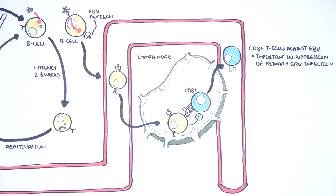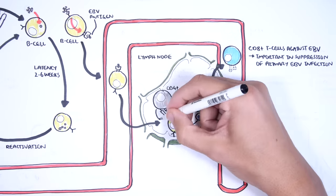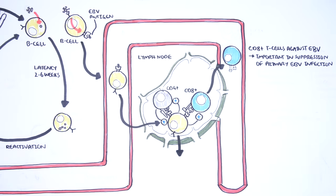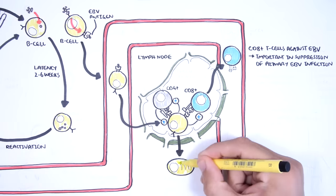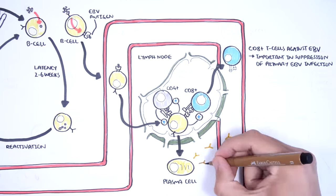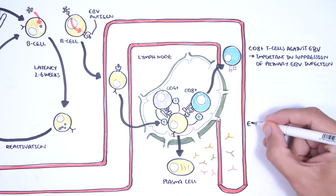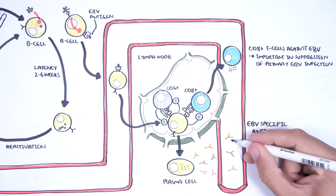On a side note, CD8 T cells are thought to be important in preventing Epstein-Barr virus reactivation and Epstein-Barr virus associated lymphoproliferative disease. The B cells also activate CD4 T cells through co-stimulation, which means the B cells also become activated. This is important because activated B cells become plasma cells, and the plasma cells are the antibody-producing cells, which will produce Epstein-Barr virus specific antibodies.